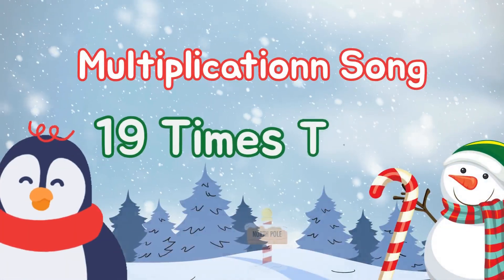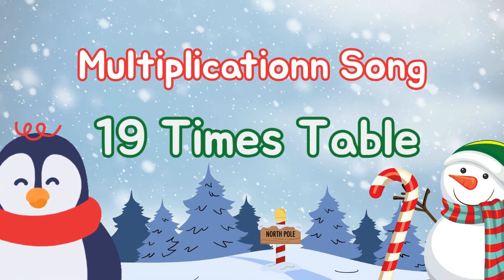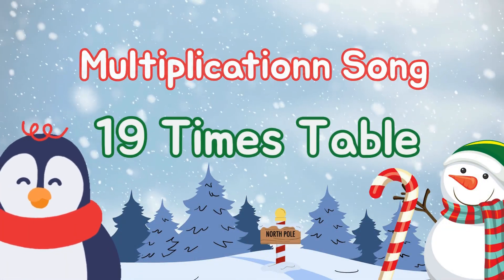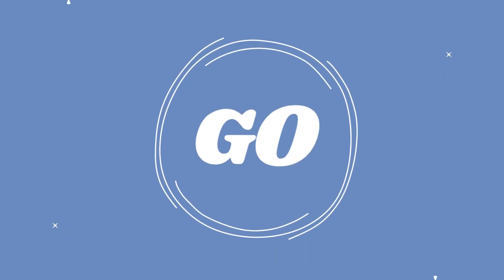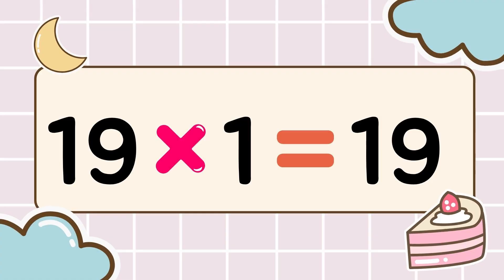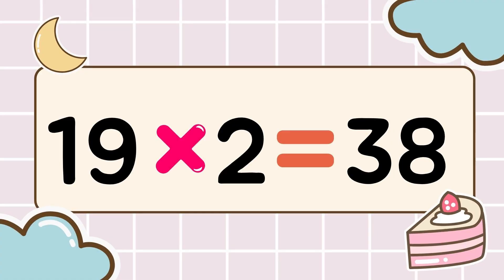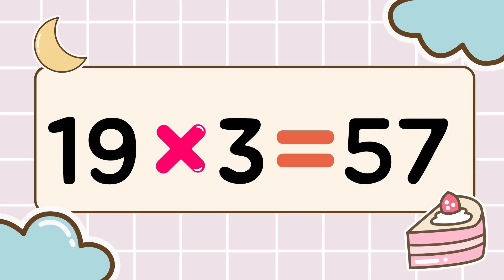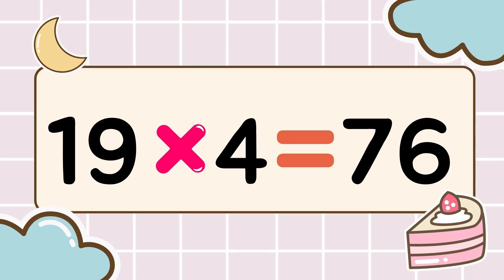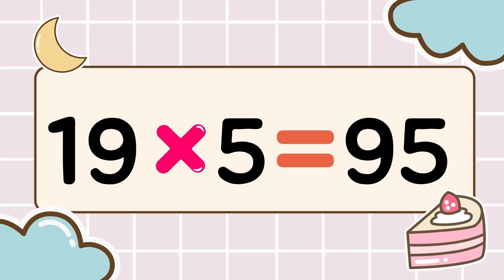Math time, let's multiply! Let's have fun while we memorize. 3, 2, 1, go! 19 times 1 is 19, 19 times 2 is 38, 19 times 3 is 57, 19 times 4 is 76, 19 times 5 is 95. Awesome!